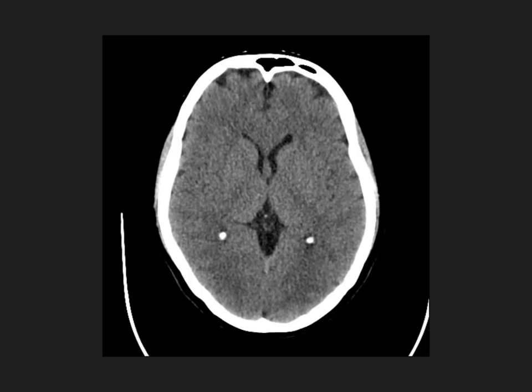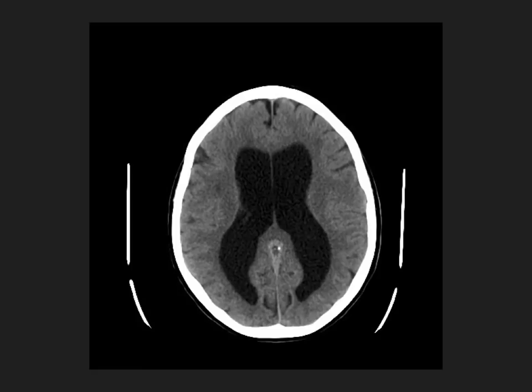This is a normal CT scan of the brain. We can see adequate brain tissue, we see the sulci and the gyri, and really nothing abnormal here. This is what's considered a normal brain scan. Now look at this being normal and then ask yourself what's going on in the next image.